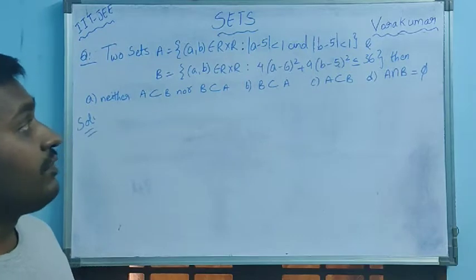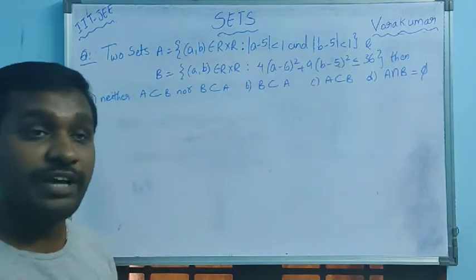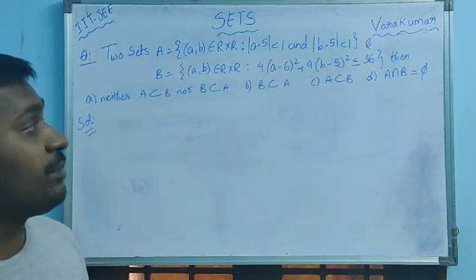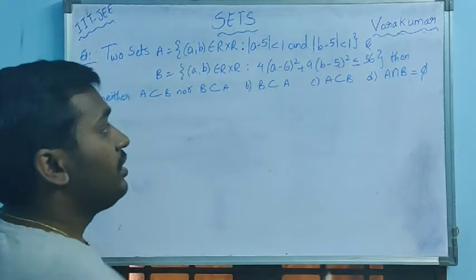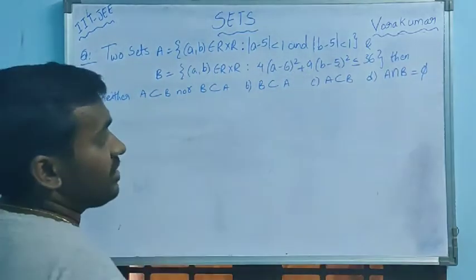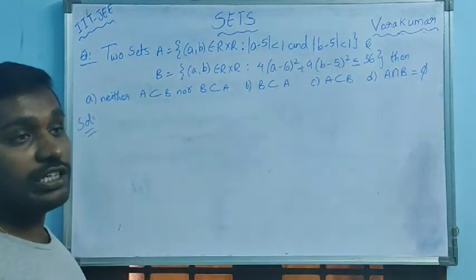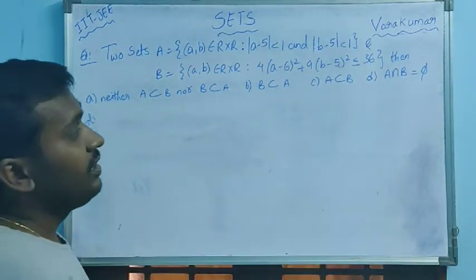R cross R such that modulus a minus 5 less than 1 and modulus b minus 5 less than 1, and set B is equal to (a,b) belongs to R cross R: 4(a-6)² plus 9(b-5)² less than or equal to 36.